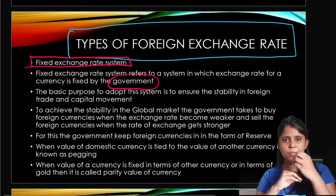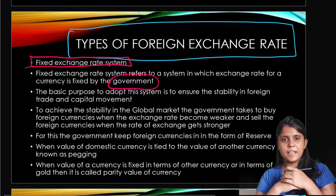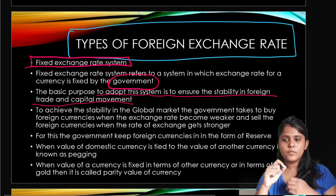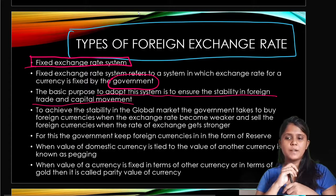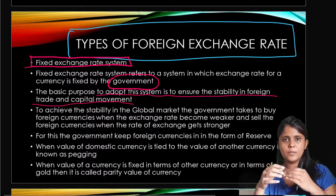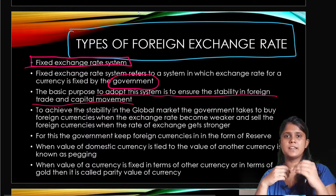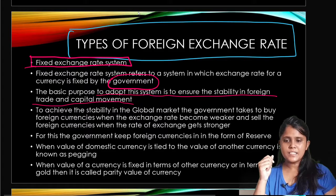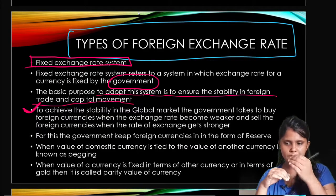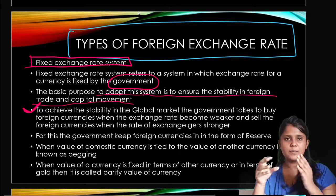The government plays its major role here. The basic purpose of adopting this system is to ensure stability in foreign trade and capital movement. The aim is to maintain stability so that the currency's value will not be excessively reduced by market forces. To achieve stability, the government buys foreign currencies when the exchange rate becomes weaker and sells foreign currencies when the exchange rate gets stronger.